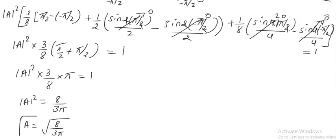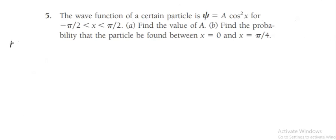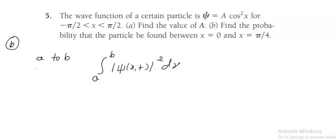This is the normalization constant A. In part B, we have to find the probability of finding the particle. From the general statement, the probability of finding the particle between a and b is given by the integral from a to b of mod of psi(x, t) squared dx. Here we have to find the probability from x equals 0 to x equals pi by 4.